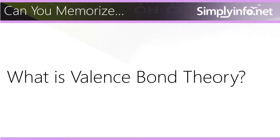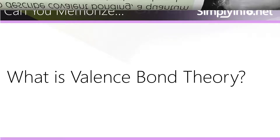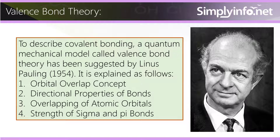Can you memorize what is Valence Bond Theory? To describe covalent bonding, a quantum mechanical model called Valence Bond Theory has been suggested by Linus Pauling. It is explained as follows: orbital overlap concept, directional properties of bonds, overlapping of atomic orbitals, and strength of sigma and pi bonds.